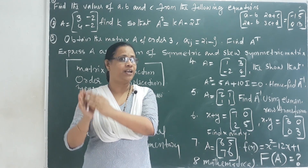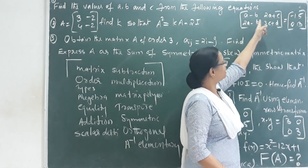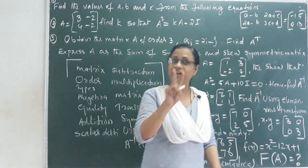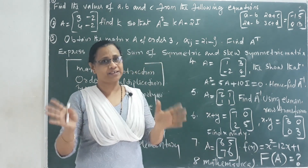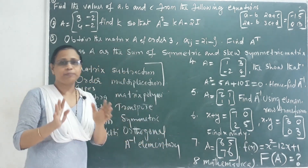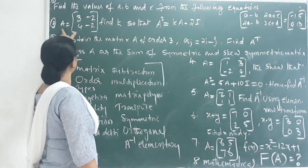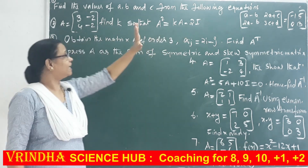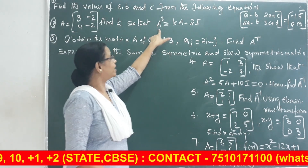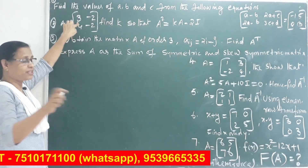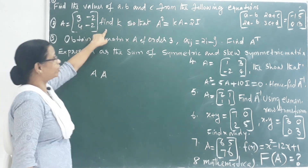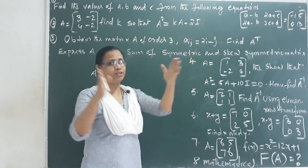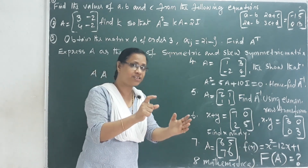We have two points. The corresponding elements are equal. The value of a minus b is equal to negative 1. The value of 2a minus b is equal to 0. We can find the value of a minus b and then solve for the variables. Corresponding elements are equal — that is the equality of matrices.